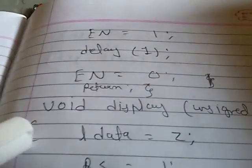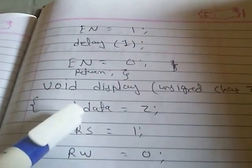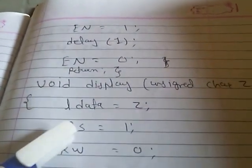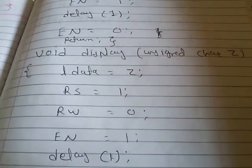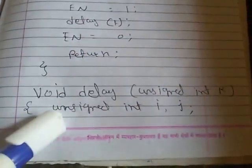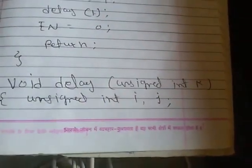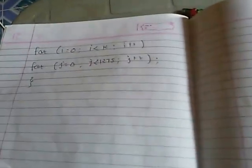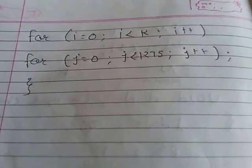The void display function works the same as void command, except the RS pin is set to 1 because we are sending data to the LCD. We again give a high-to-low pulse on the enable pin. Then we define the delay function using two unsigned integers i and j with nested for loops.